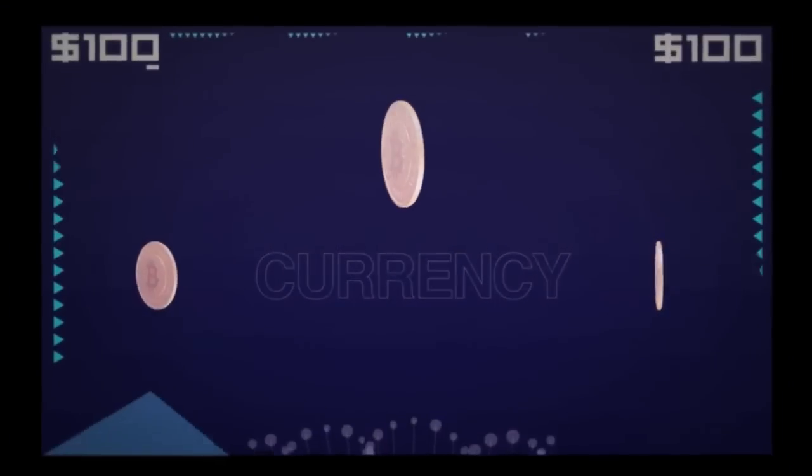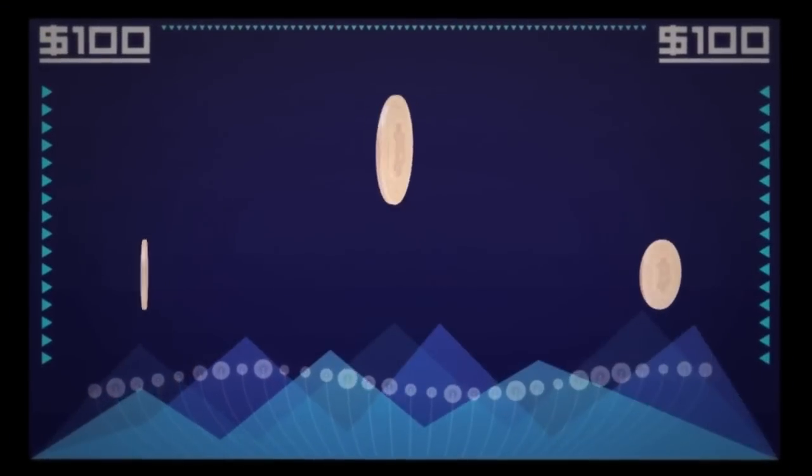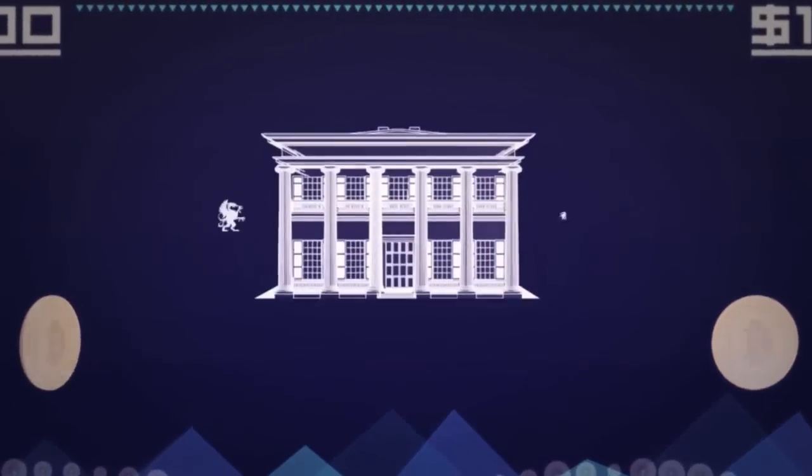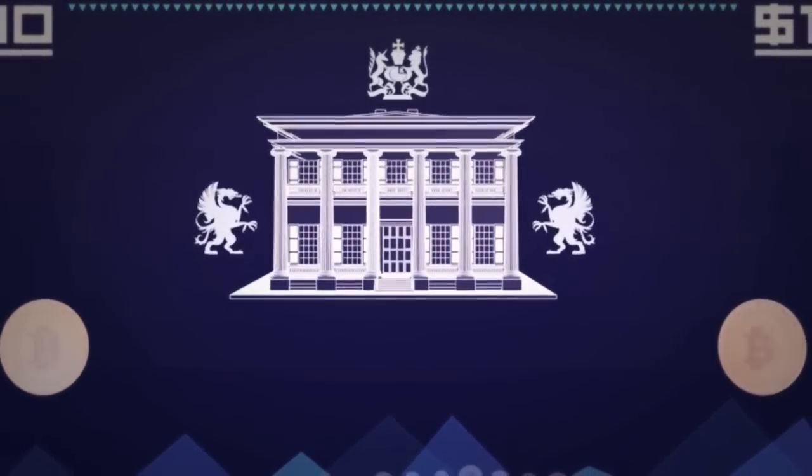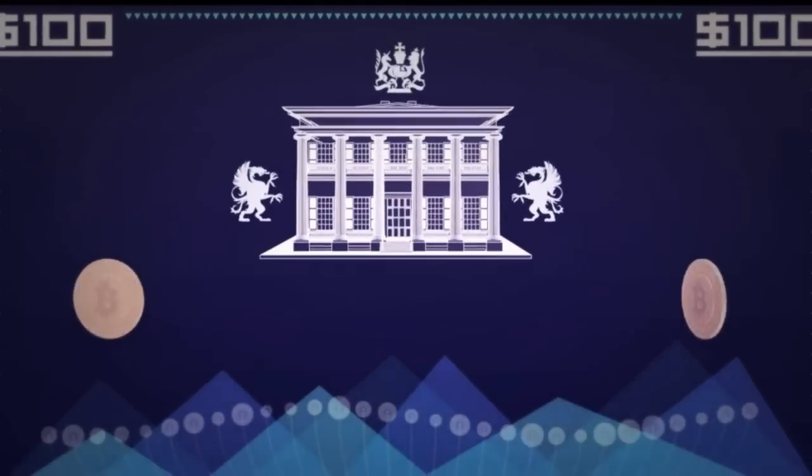Some researchers are pointing out that Iran is one of the only three countries left in the world whose central bank is not under Rothschild control. Before 9-11, there were reportedly seven – Afghanistan, Iraq, Sudan, Libya, Cuba, North Korea and Iran.